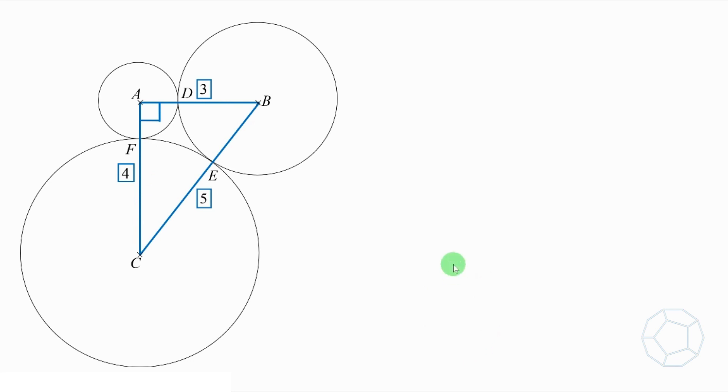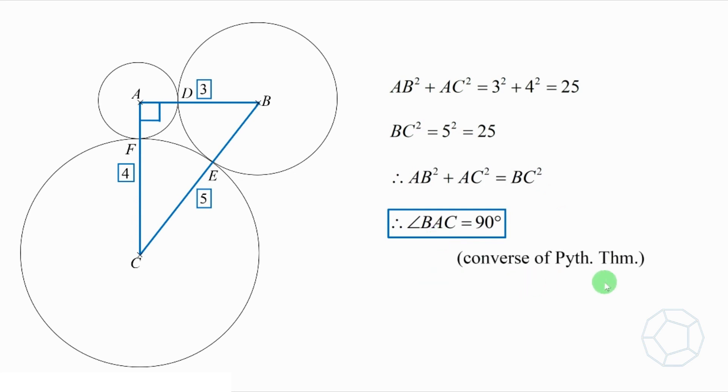Because AB square plus AC square is equal to 25, and BC square is also equal to 25, therefore the sum of squares of the two shorter sides is equal to the square of the longest side. That means angle BAC is equal to 90 degrees, and the reason is converse of Pythagoras theorem. Remember this important result. You shall use it later.